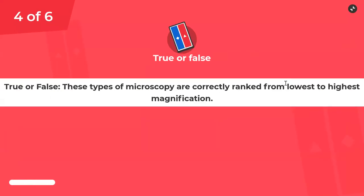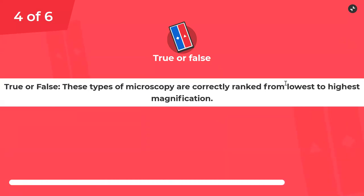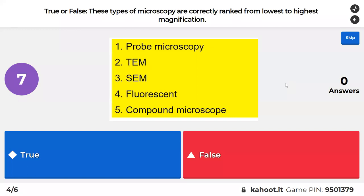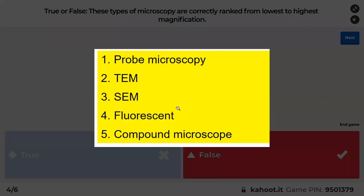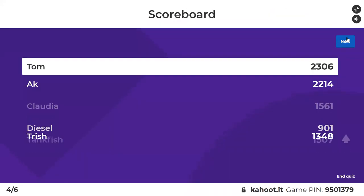True or false: these types of microscopy are correctly ranked from lowest to highest magnification. The correct answer is false — this is the exact opposite order. Probe microscopy has the highest magnification, all the way down to compound microscopy which has the lowest. So read the questions carefully — this is false because they're ranked in the exact opposite order.